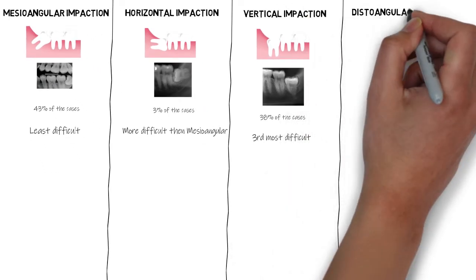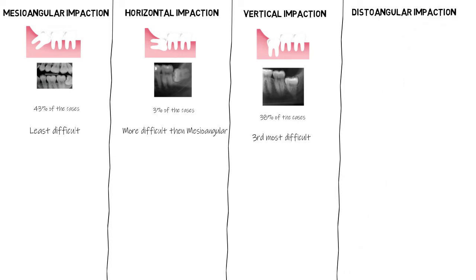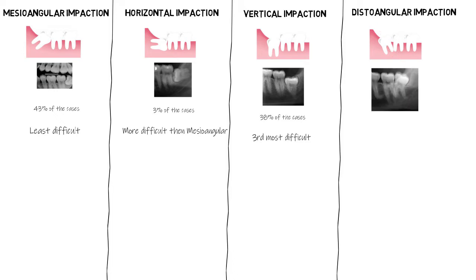The fourth is the distoangular impaction, in which the long axis of the tooth is in the distal direction relative to the adjacent second molar, or positioned away from it. This type accounts for about 6% of all lower third molar impaction cases and is the most difficult to extract among the four, simply because the withdrawal path of the tooth is into the mandibular ramus and therefore requires significant surgical intervention to extract.